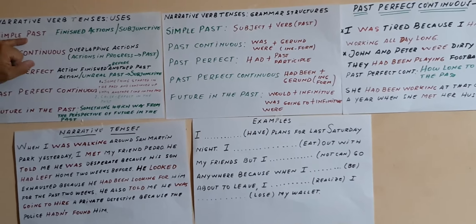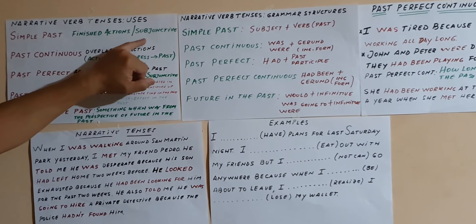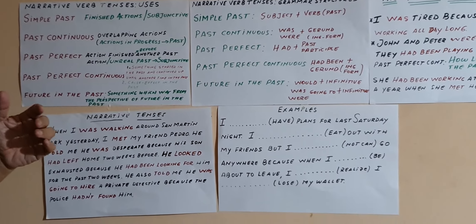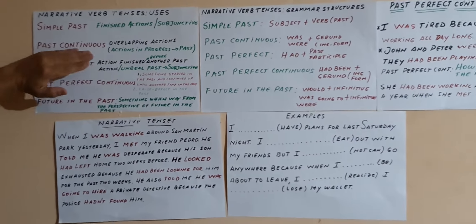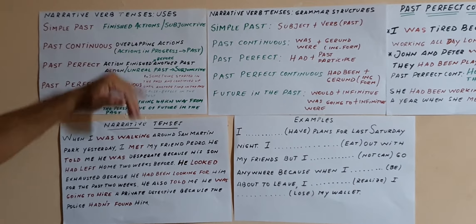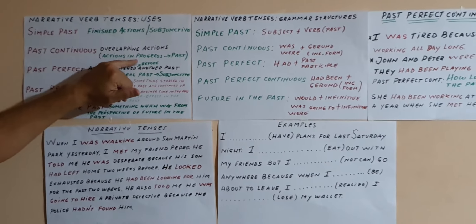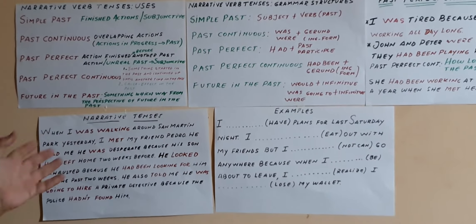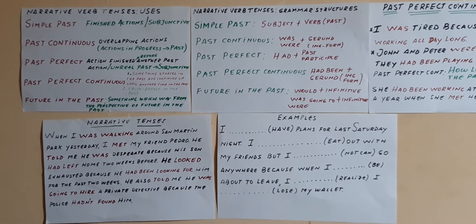The simple past — you remember — is used for finished actions. It is also used as a subjunctive when we talk in the second case of conditional sentences. The past continuous is used for overlapping actions, that is to say, two actions in progress in the past — one in progress and the other interrupted by another one.